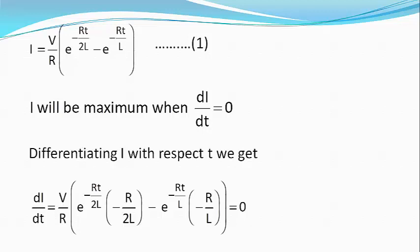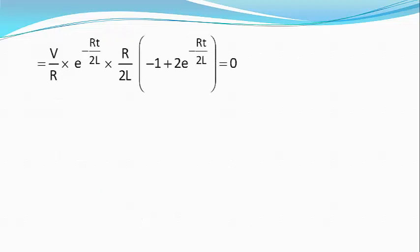Or V divided by R into e raised to power minus RT divided by 2L into R divided by 2L, bracket starts, minus 1 plus 2e raised to power minus RT divided by 2L equals 0.